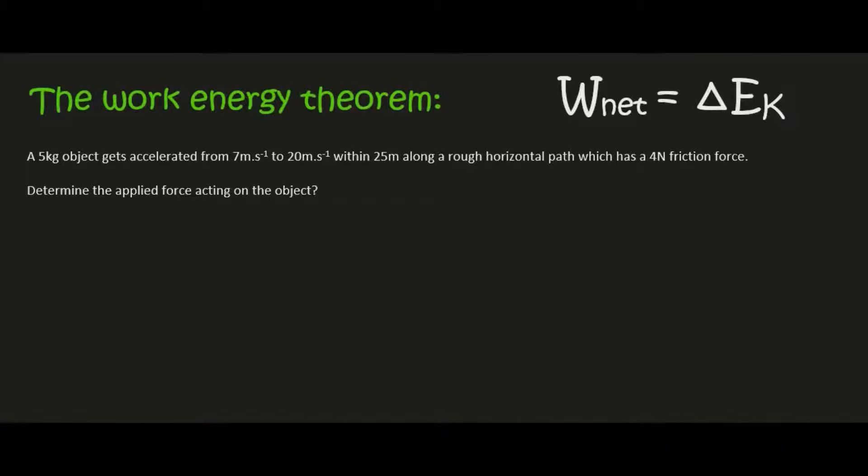Hello everyone. In this lesson we have a 5 kilogram object that is going to be accelerated from 7 meters per second to 20 meters per second within 25 meters along a rough horizontal path with 4 newtons of friction. Determine the applied force acting on the object.